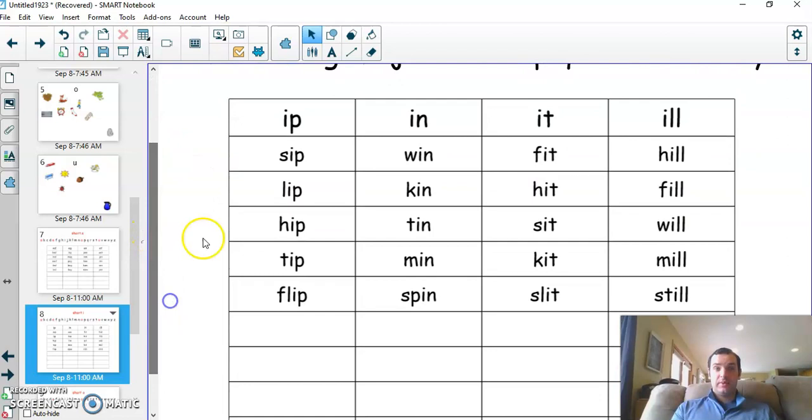Here's some more. Here's the i, some short i sounds. Let's read some words here. With the i-p ending. Sip, lip, tip, flip.